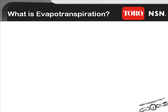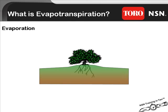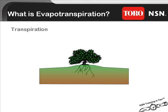Before we define ET, let's first review a couple of pivotal concepts beginning with evaporation. Evaporation is the process of water transferring from any moist surface to the air or to the atmosphere — primarily, it involves water moving from the moist soil and plants into the air. The next concept is transpiration, which refers to the water vapor that escapes into the atmosphere from the plant itself through each of the individual pores or stoma scattered over the surface of each leaf.